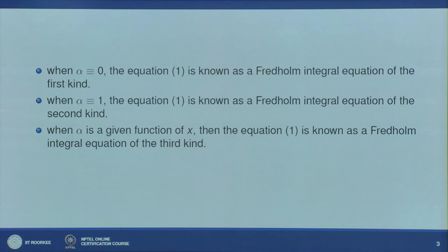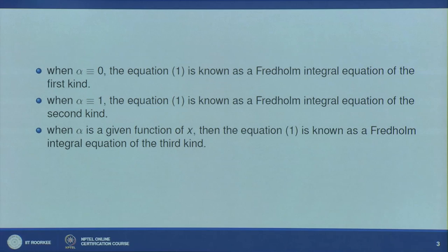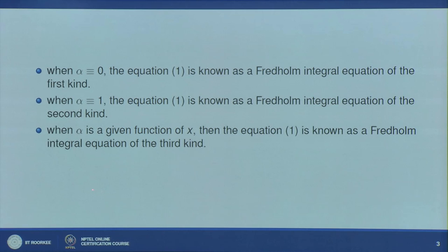Based on the function α(x), we can categorize this integral equation into three kinds. First, when α(x) is identically equal to 0, equation 1 is known as the Fredholm integral equation of the first kind, meaning the term vanishes and we have f(x) + λ∫ₐᵇ k(x,t)·y(t)dt = 0. If α(x) is identically equal to 1, it is the Fredholm integral equation of the second kind. If α is not a constant but a function of x, it is the Fredholm integral equation of the third kind. In general practice we discuss only the first and second kinds; very rarely do we discuss the third kind.